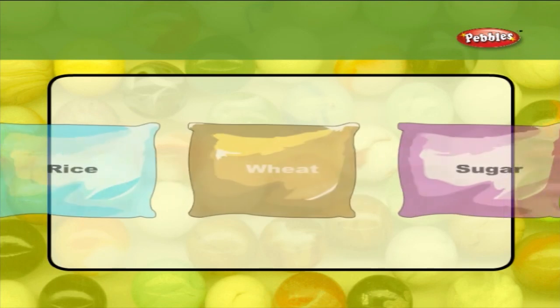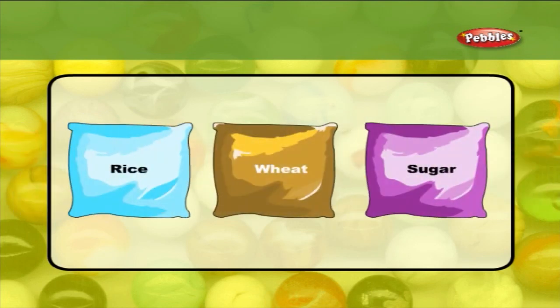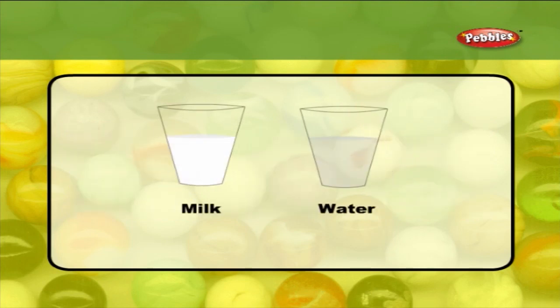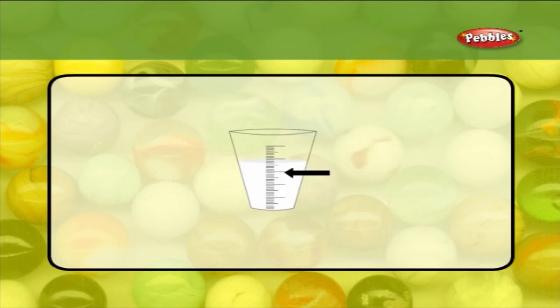These weights are used for products like rice, wheat, and sugar also. Other liquid items like milk or water are measured in liters. The lines in the tumbler show the measurement.